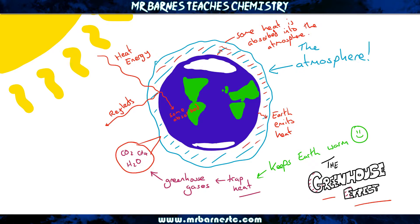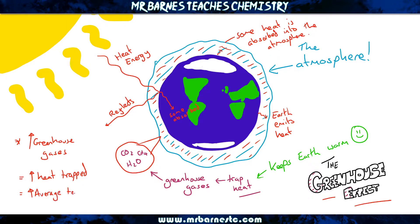However, if we increase the amount of greenhouse gases, that means more and more heat will be trapped and it won't be able to escape the atmosphere. Therefore the average temperature of the earth will increase.